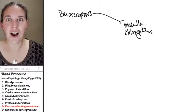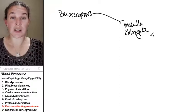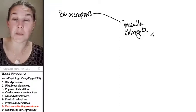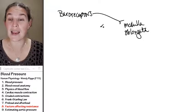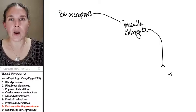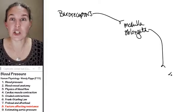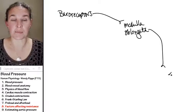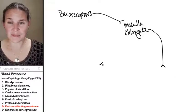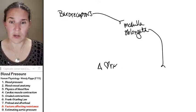The medulla oblongata is in your brain stem and is going to receive the message. Oh, baroreceptors are stretching too much. Blood pressure must be too high. Send the message. What could we possibly do if blood pressure is too high? We could change heart rate.